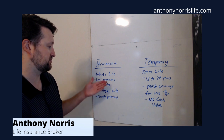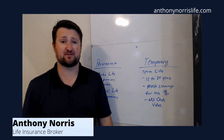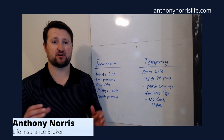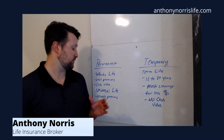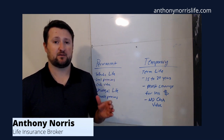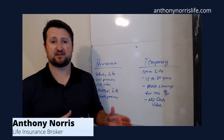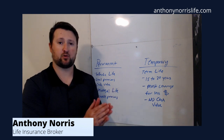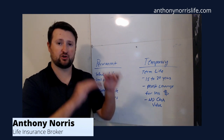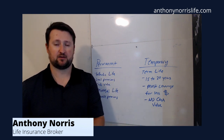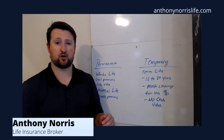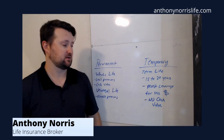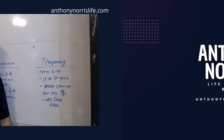Universal life is permanent coverage as well. The main difference between universal life and whole life is that universal life has flexible premiums — you can adjust your premium amounts and your death benefit based on your needs at that point in your life. If you need less coverage, you can lower your premium and death benefit; if you need more, you can raise them. Those are the main types of insurance.